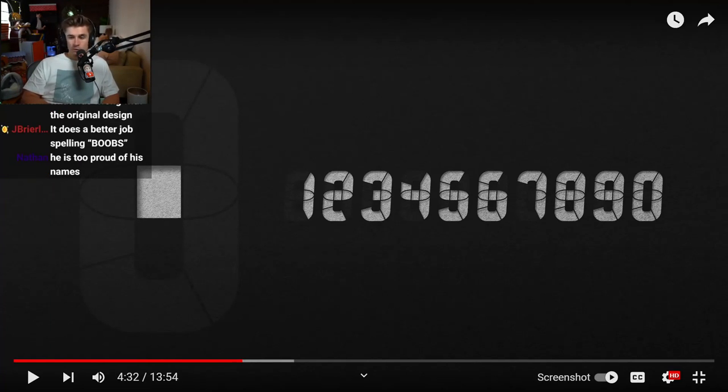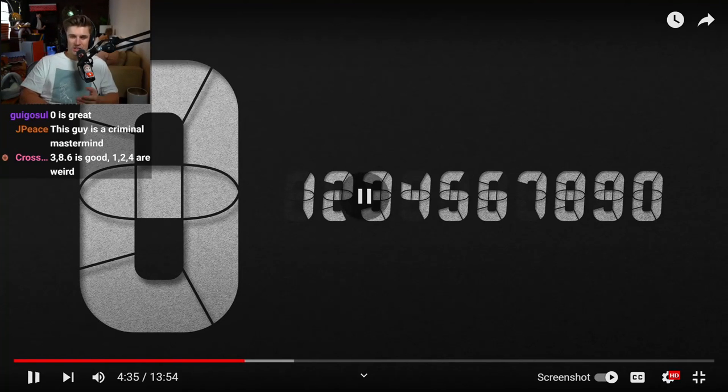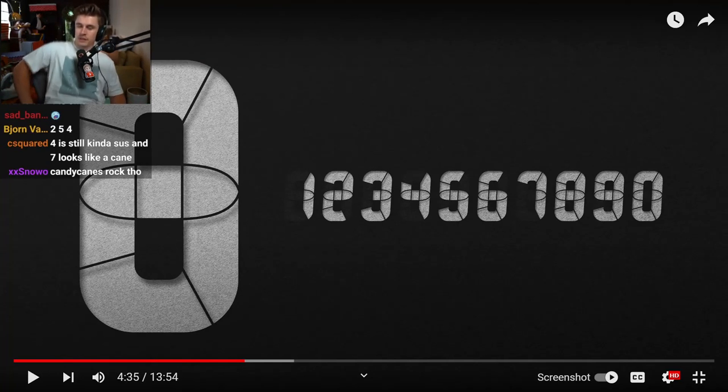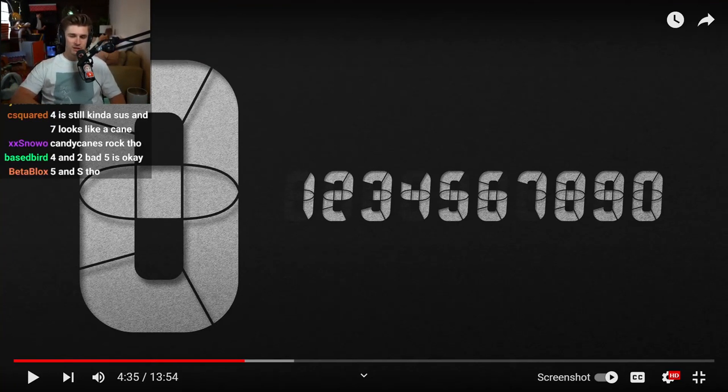One, seven, zero look better. I still have qualms with four, it's ugly. Two's mid, five's mid, six all right. Seven looks like a candy cane because it's so pointy. The zero is amazing here. The two's not terrible, it's not as bad as the four I think.